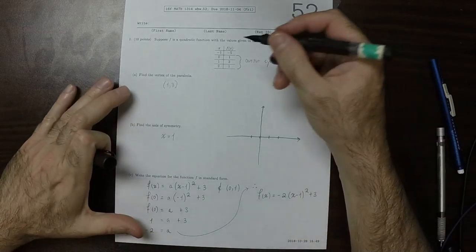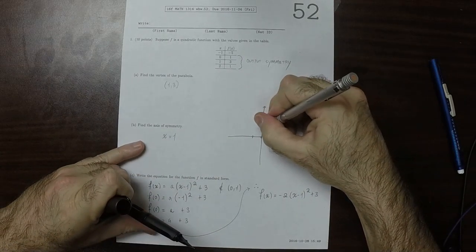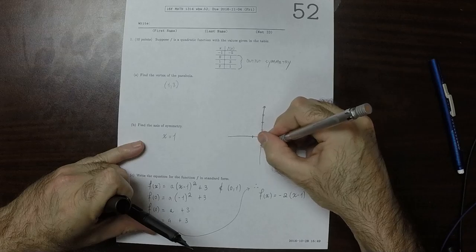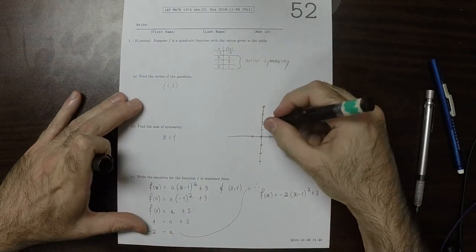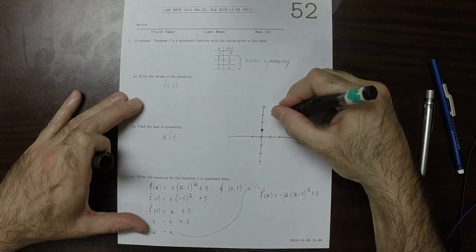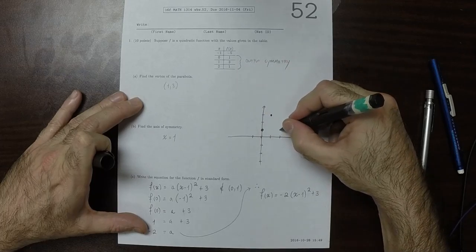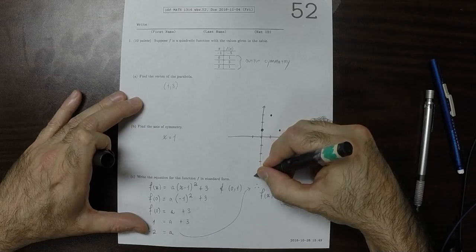So the table is saying that if you plug in 0, you're supposed to get 1. If you plug in 1, you get 3. If you plug in 2, you get 1. And if you plug in negative 1, you get negative 5, which is down here-ish.